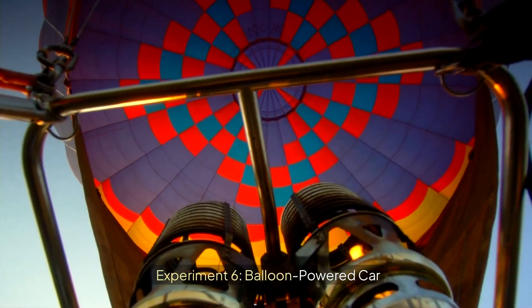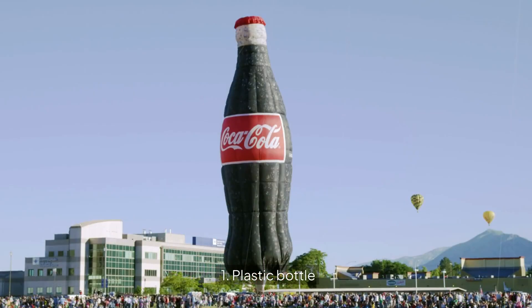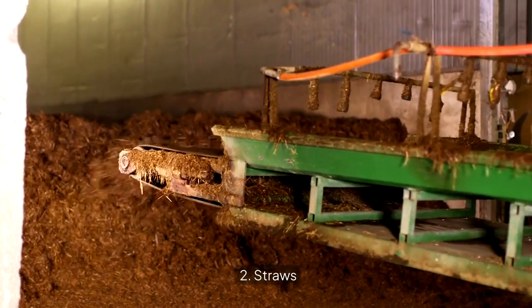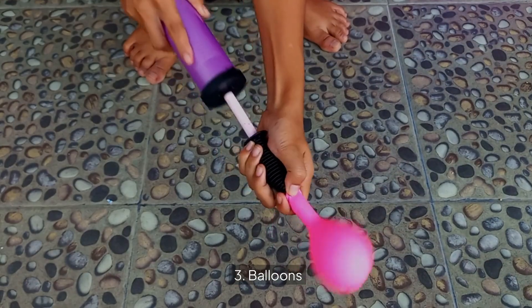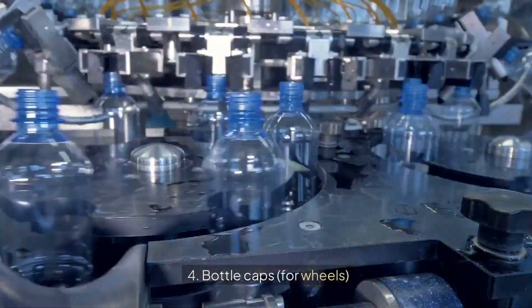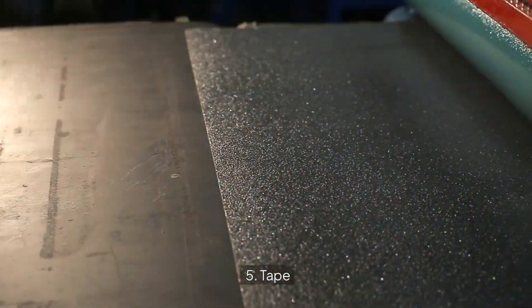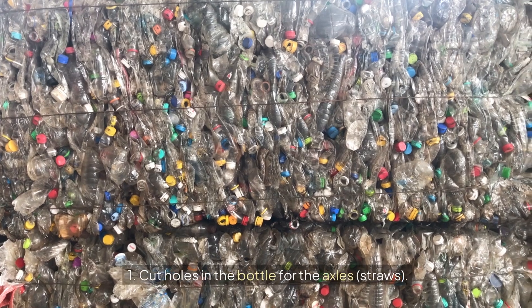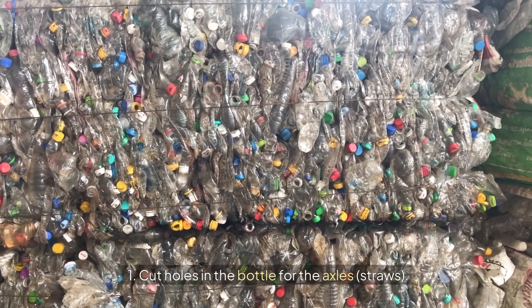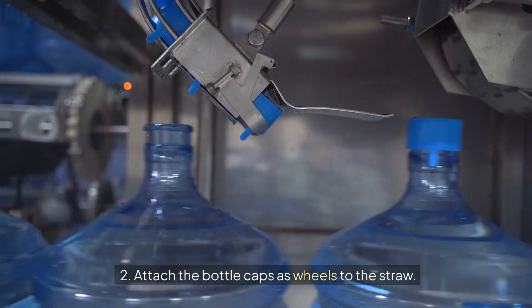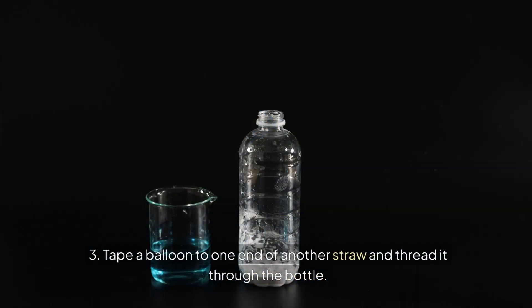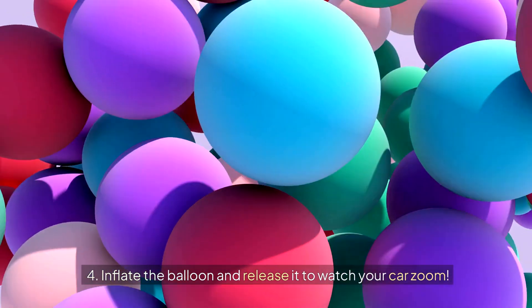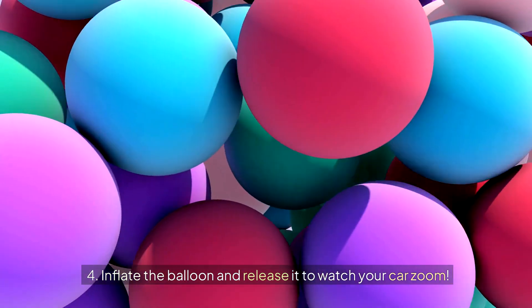Experiment 6: Balloon-powered car. Supplies: plastic bottle, straws, balloons, bottle caps for wheels, and tape. Steps: Cut holes in the bottle for the axles (straws). Attach the bottle caps as wheels to the straw. Tape a balloon to one end of another straw and thread it through the bottle. Inflate the balloon and release it to watch your car zoom.